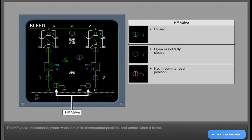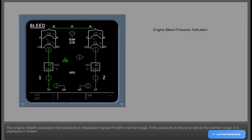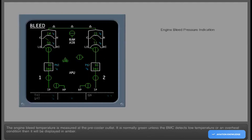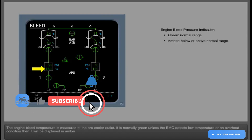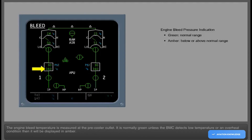The HP valve indication is green when it is in its commanded position, and amber when it is not. The engine bleed pre-cooler inlet pressure is displayed in green if within normal range; if the pressure is below or above the normal range, it is displayed in amber. The engine bleed temperature is measured at the pre-cooler outlet. It is normally green unless the BMC detects low temperature or an overheat condition, then it will be displayed in amber.